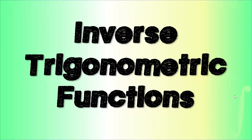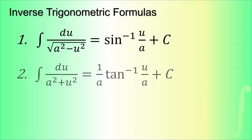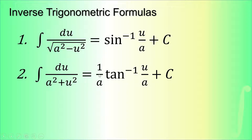Our next topic will be about the inverse trigonometric functions. There are two major formulas. The first one: if we integrate du over the square root of (a² - u²), where a is a constant and u is our variable, that equals arcsin(u/a) + C. The second one is the integral of du over (a² + u²), which equals (1/a) arctan(u/a) + C.